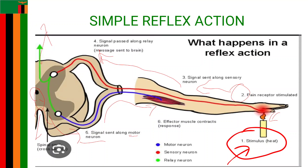The effector muscles contract, forcing the hand exposed to heat to move away. This is what we call a simple reflex action, and it occurs at a very fast pace. An individual with spinal cord injury may not be able to perform these simple reflex actions because the nerves are damaged and cannot conduct information normally to complete the reflex on any portion of the body.